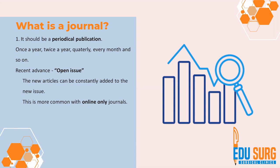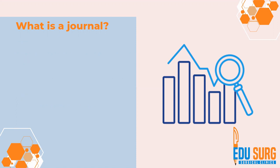A recent advance in journal types is known as an open issue. In commonly online-only journals, new articles can be constantly added to the same issue. A journal in open issue mode has new articles constantly added throughout the year, so it is not strictly a periodical publication, but it is still a valid journal format.